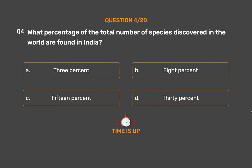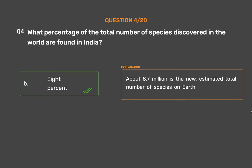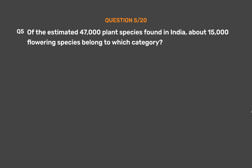The correct answer is Option B: 8%. About 8.7 million is the estimated total number of species on Earth.